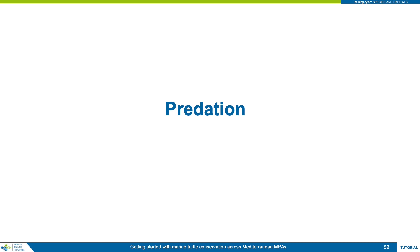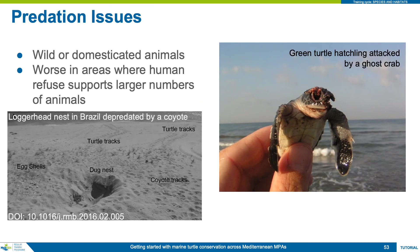The issue of predation may be a somewhat natural pressure on sea turtle populations, but given the other mounting pressures and the high proportion of nests that can be lost to predation, it is important to address this threat. Often where there is development there is waste, and this can lead to increased populations of wild or feral animals that can prey on turtle nests or hatchlings, with the potential to wipe out the output from whole clutches. Examples of wild predators are foxes that dig up nests and ghost crabs that attack hatchlings on the beach, while feral domesticated animals — mainly dogs — dig up nests, and cats are known to attack and kill hatchlings.